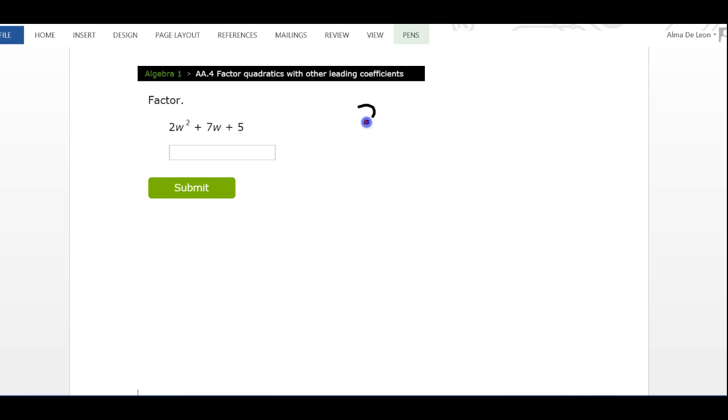I'm going to start by rewriting my trinomial on the side. My trinomial is 2w² + 7w + 5. Same process: to figure out what goes on the front of my parentheses, I look at the front of my trinomial. What times what gives me 2w²? There's only one thing: 2w times 1w gives me 2w².